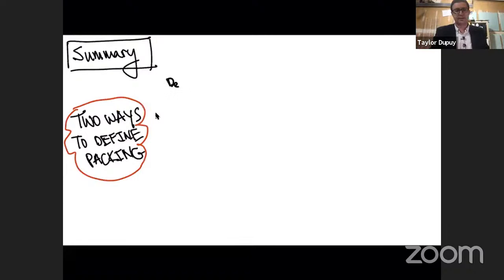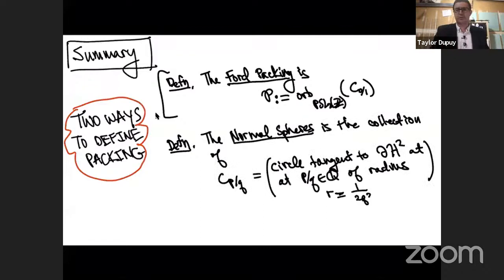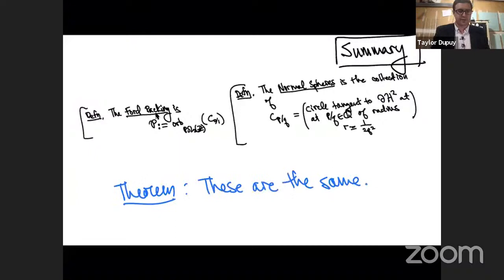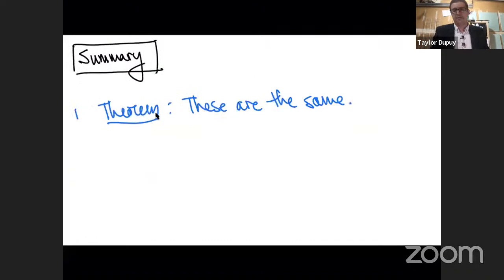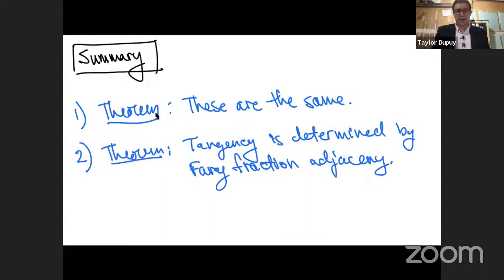To summarize: there were two ways to define the packing — the Ford packing as the orbit of the circle at zero under PSL2Z, and the normal spheres defined by point of tangency and radius 1/(2q²). There's a theorem that these two things are the same. In the classical situation they coincide. We also have a description of when two circles are tangent via a Farey fraction property, characterized by that determinant condition rq − ps = 1, which relates to how SL2Z is defined.